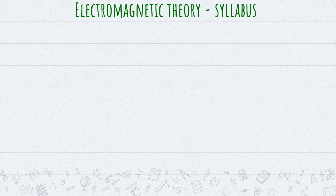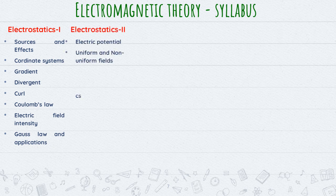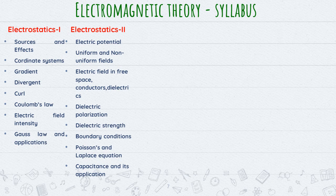Let us begin our journey of Electromagnetic Theory. I will show you the detailed syllabus of what is in this subject. The first unit covers Electrostatics Part 1 — Electrostatics is divided into two parts. The first part covers different coordinate systems, electric field intensity and its application.